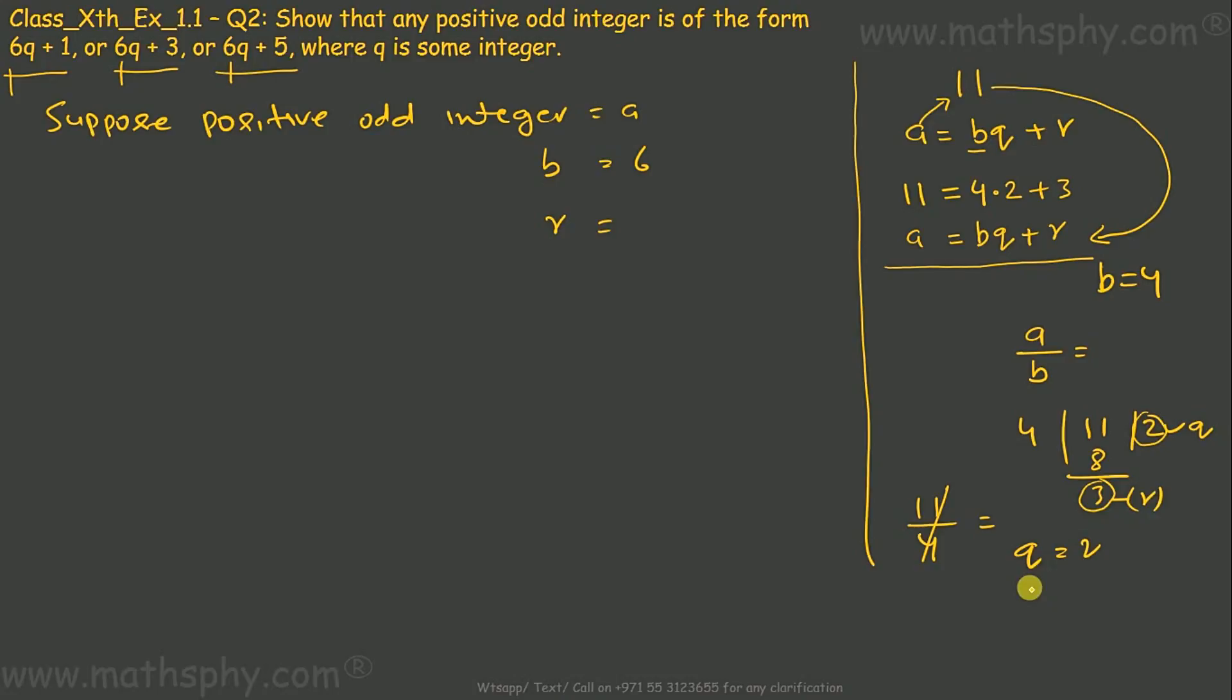Quotient was 2 and remainder was 3. We know that in any case, whenever we divide any number by any number, remainder can never be more than the divisor. Here divisor was 4, remainder was 3. You take any number, 19 divided by say 5, it would give you remainder 4 and quotient 3. Again, remainder is less than divisor.